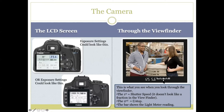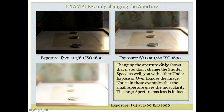The light meter indicator tells you if you have a good exposure or not. When that little marker — which could be a rectangle, circle, or triangle — sits underneath the middle, you have a good exposure. Let's look at some examples of bad exposures versus a good exposure.